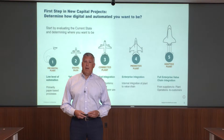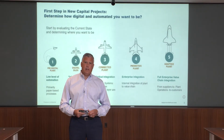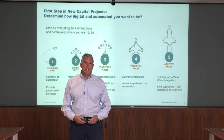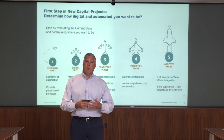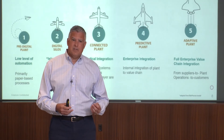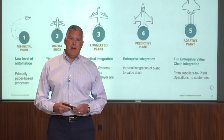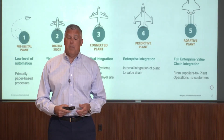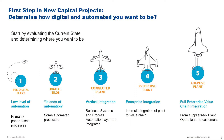The next level up is a connected plant, where you start to get vertical integration — operational systems data being transferred into business systems. Above that is a predictive plant with enterprise integration, where we look at how the plant is running today, how we can make it run better, and how we can predict different scenarios to avoid problems. And then lastly we have full enterprise value chain integration, looking at how to operate all of your plants together to meet contractual obligations and optimize supply chain.